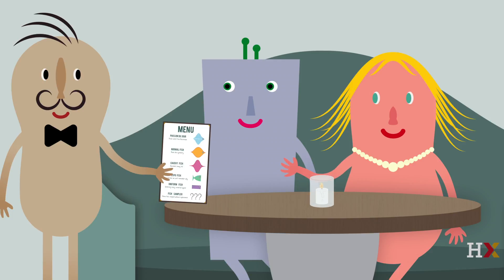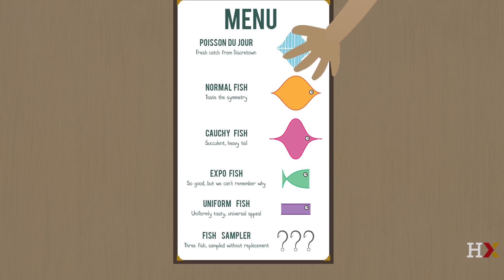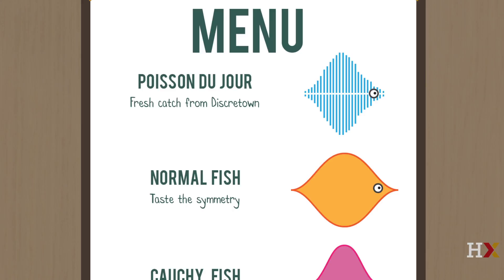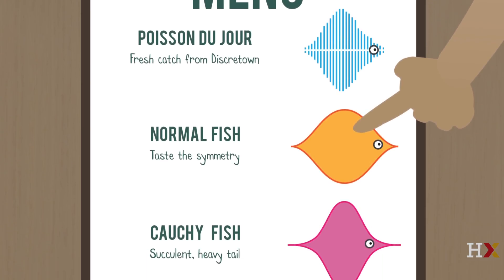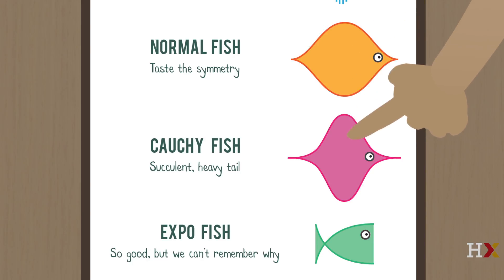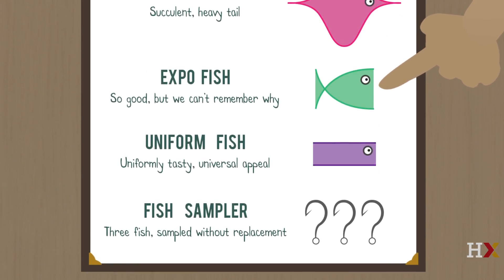What do you recommend? Each of our dishes has its own special flavor and story. Our most popular fish is the normal fish. But if you'd like something more exotic, you can try the koshy fish — it has an amazingly thick, juicy tail. Or the expo fish: it will make your hunger decay exponentially.